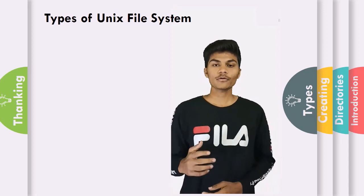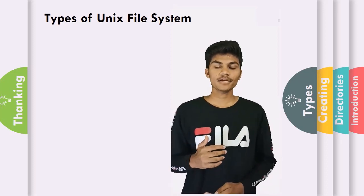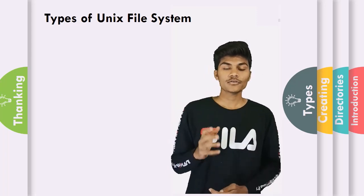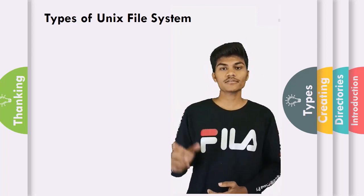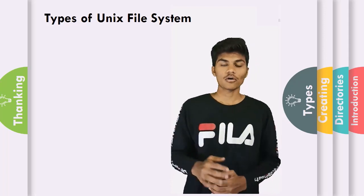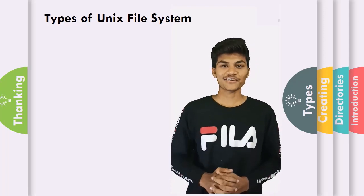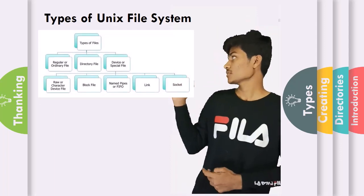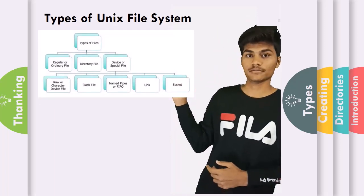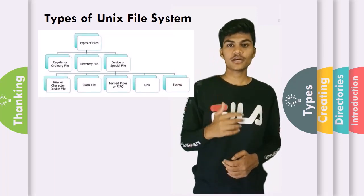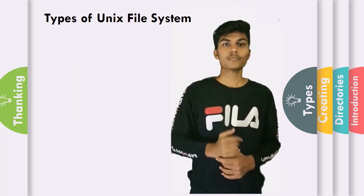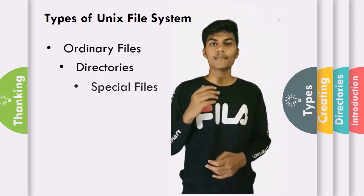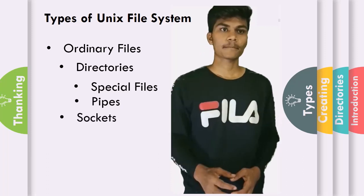Now I am explaining the types of UNIX file systems. Data in UNIX systems are organized in files, and all files are organized in directories. There are six types of UNIX file system: ordinary file, directory file, special files, pipes, sockets, and symbolic links.